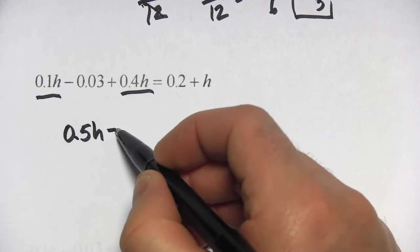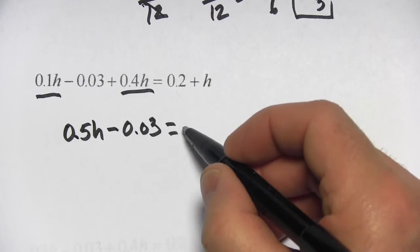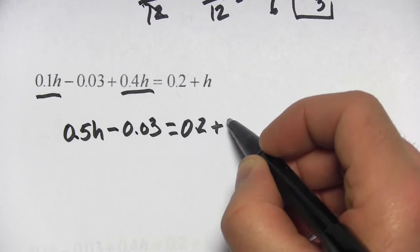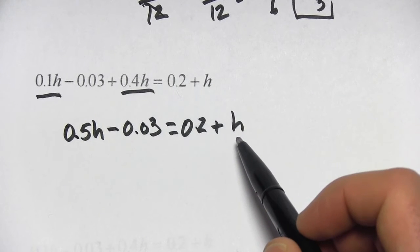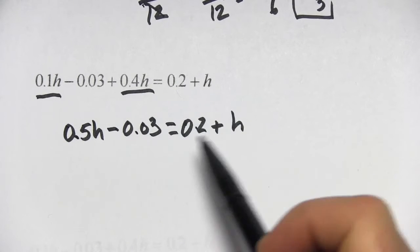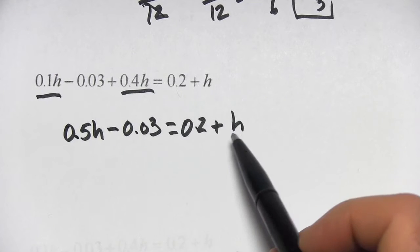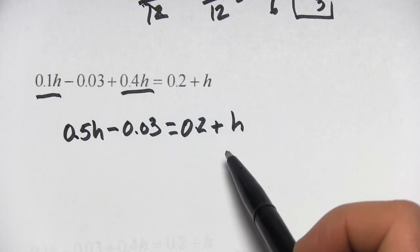And then we have this negative 0.03 and over here we have 0.2 plus h. And here you have to remember, this is 1h, that's a whole h. This is 0.5h, that's like half h. Sometimes when you do the adding and subtracting with decimals, it's easy to forget that this is 1.